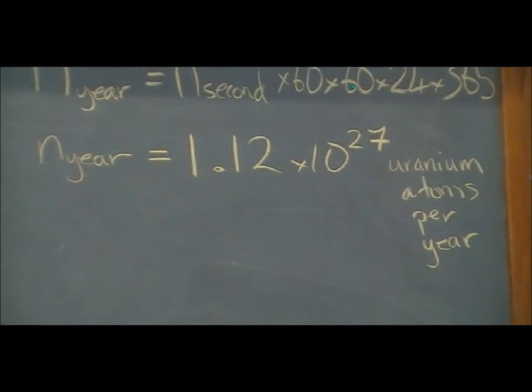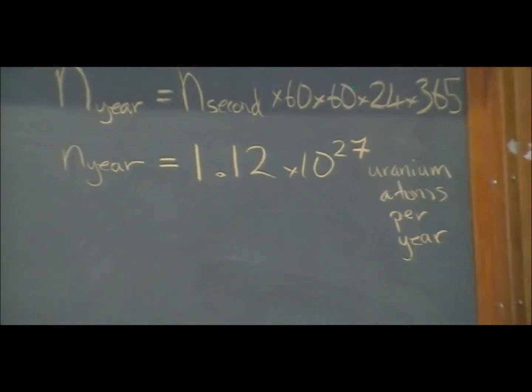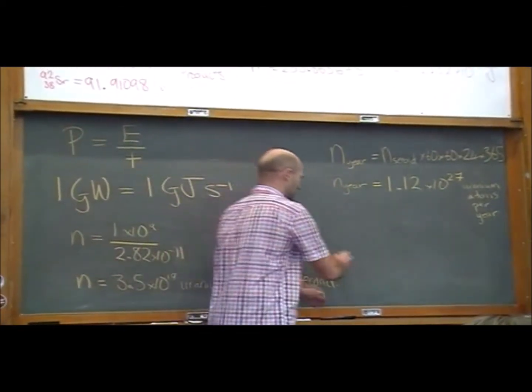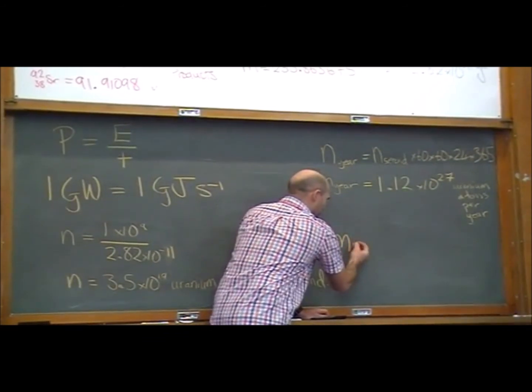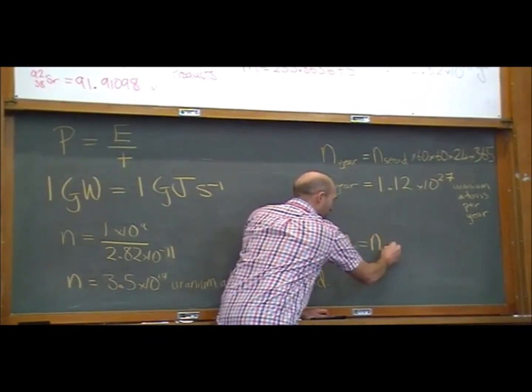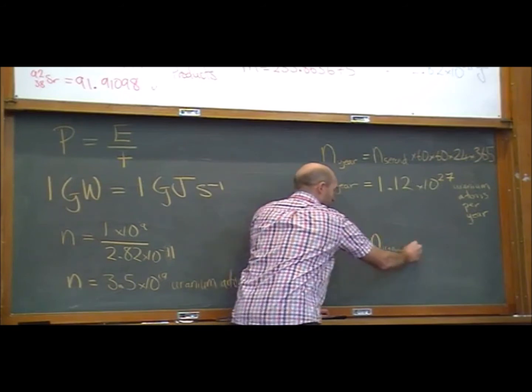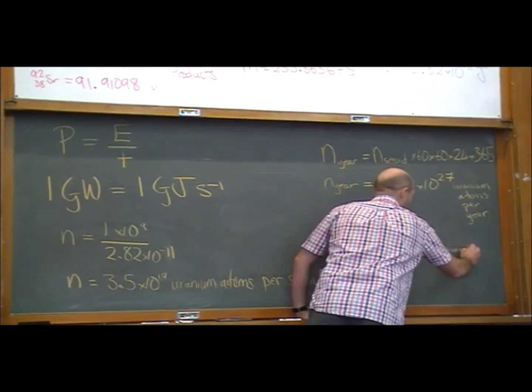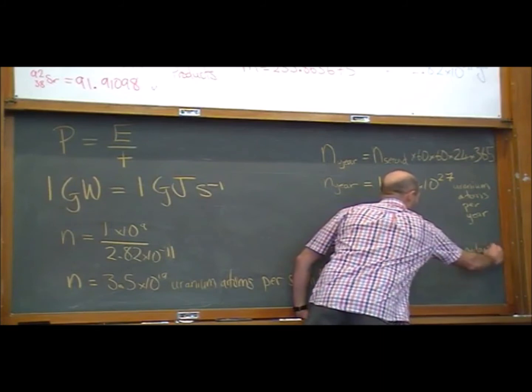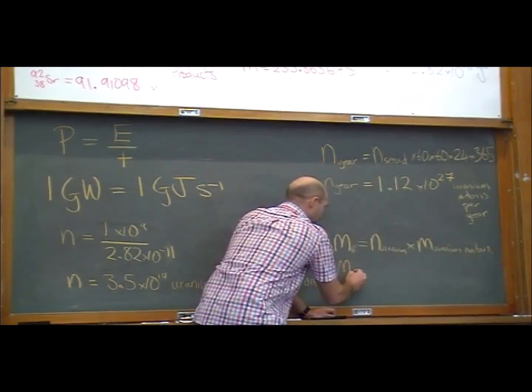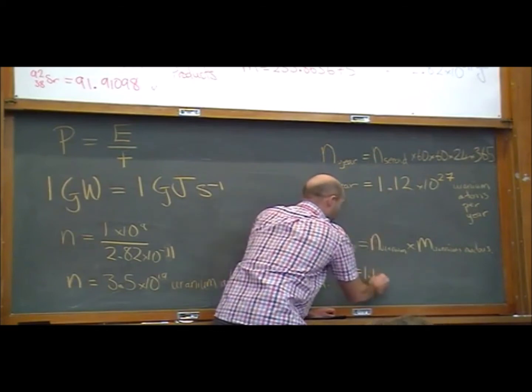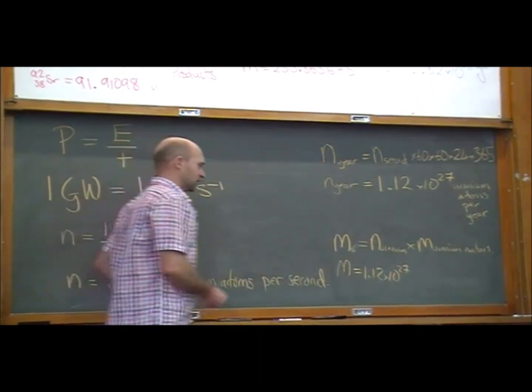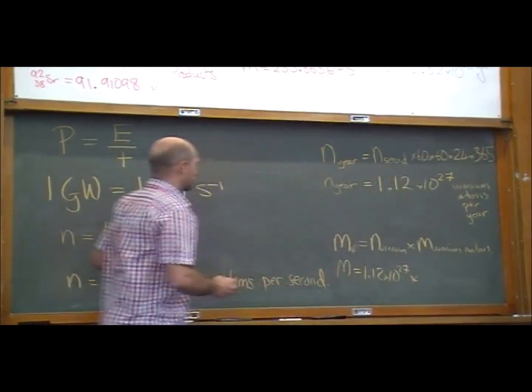So how much? We've got to go and dig up the desert, right? How many, what's the mass of uranium that we have to feed into this thing to make it generate electricity for a year? So the mass is going to be equal to the number of uranium atoms that we want times by the mass of a uranium atom, uranium nucleus, right? And so the mass that we're going to need is 1.12 times 10 to the 27 nuclei per year times by the mass of a nucleus.